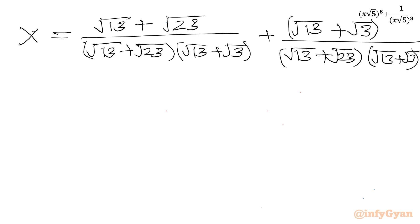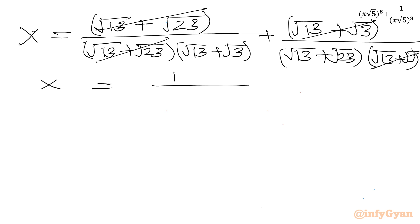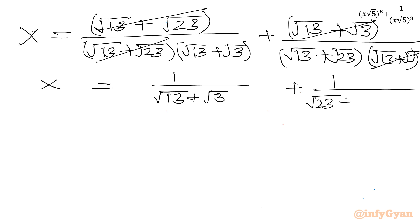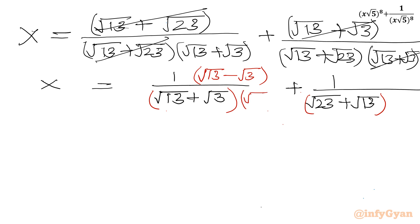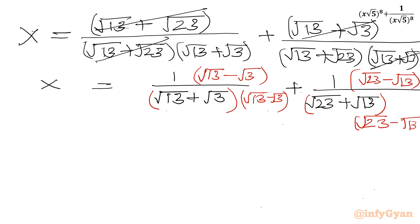Now we will cancel the brackets in numerator and denominator. After cancellation, x will be 1/(√13 + √3) plus 1/(√23 + √13). Now I will rationalize the denominator. I will multiply numerator and denominator of the first term by (√13 − √3), and of the second term by (√23 − √13). Using difference of two squares: x equals (√13 − √3) divided by (13 − 3), plus (√23 − √13) divided by (23 − 13).